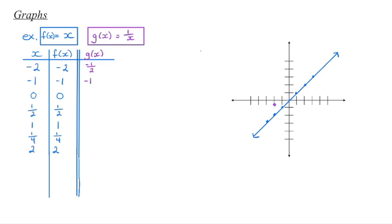So when x is negative 1, y is negative 1 — that's the same point as on the original function. If we put 0 in, 1 divided by 0 is undefined, so that point doesn't exist and we cannot plot it. If we put in x equals one half: 1 divided by one half is the same as 1 times 2, which gives us 2. So when x is one half, y is 2. When x is 1, 1 divided by 1 is just 1.